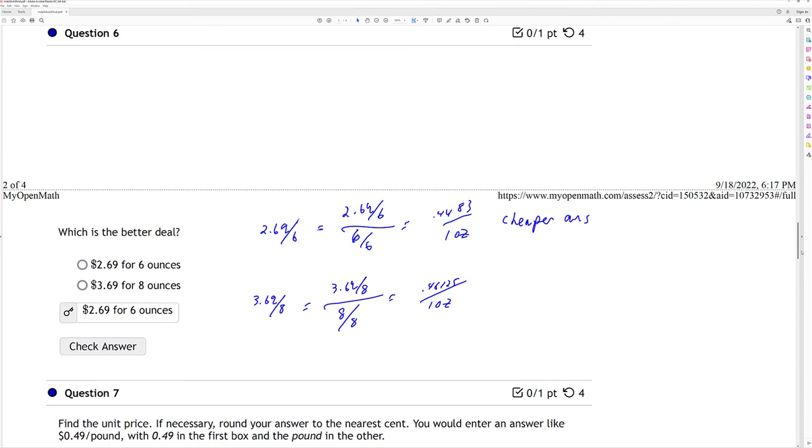Question 6. Which is the better deal? Comparative pricing. So I have here 296 for 6 ounces or 369 for 8 ounces. I divide the numerator and the denominator by 6 to get the unit per ounce. And I have .443 here per ounce. For the other one, I have .46 per ounce. So the first one is cheaper, 269 for 6 ounces.